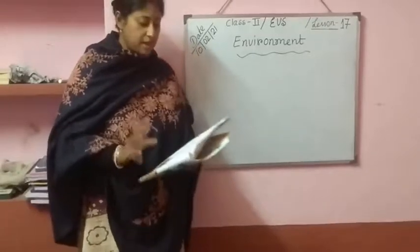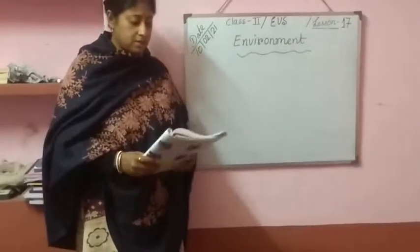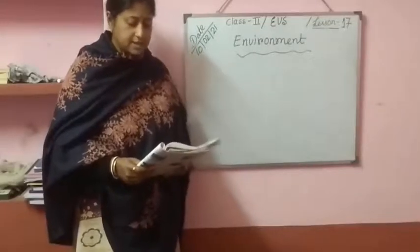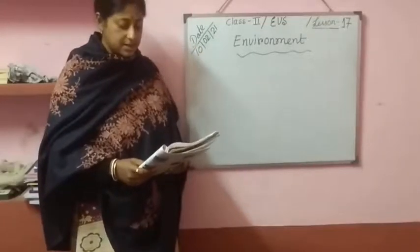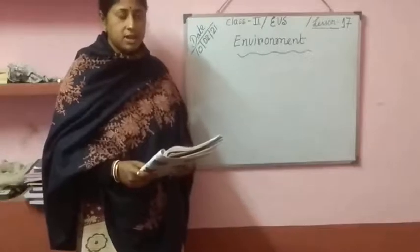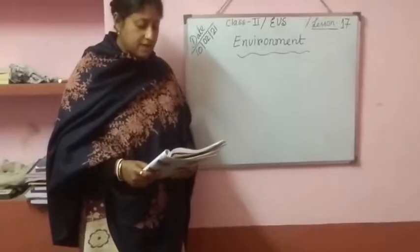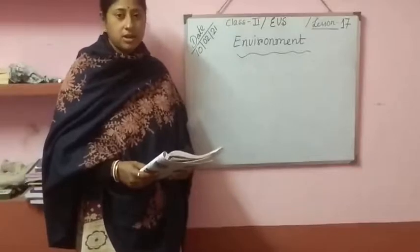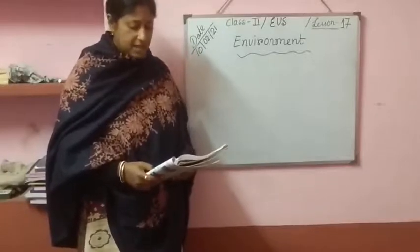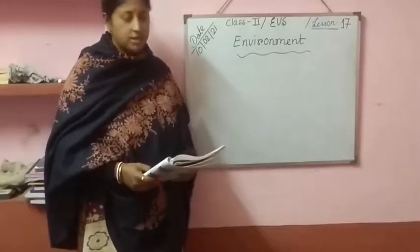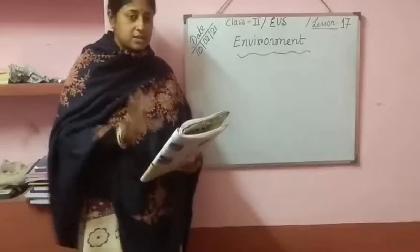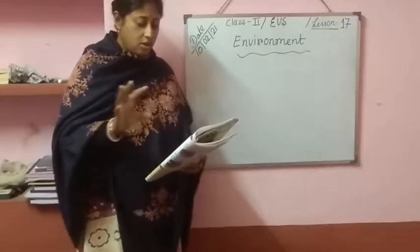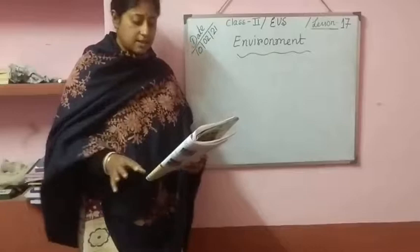What is meant by environment? Environment is the total sum of all that is around us — like air, water, soil, plants, animals, etc. Not only water, not only air — it is a mix of everything around us.